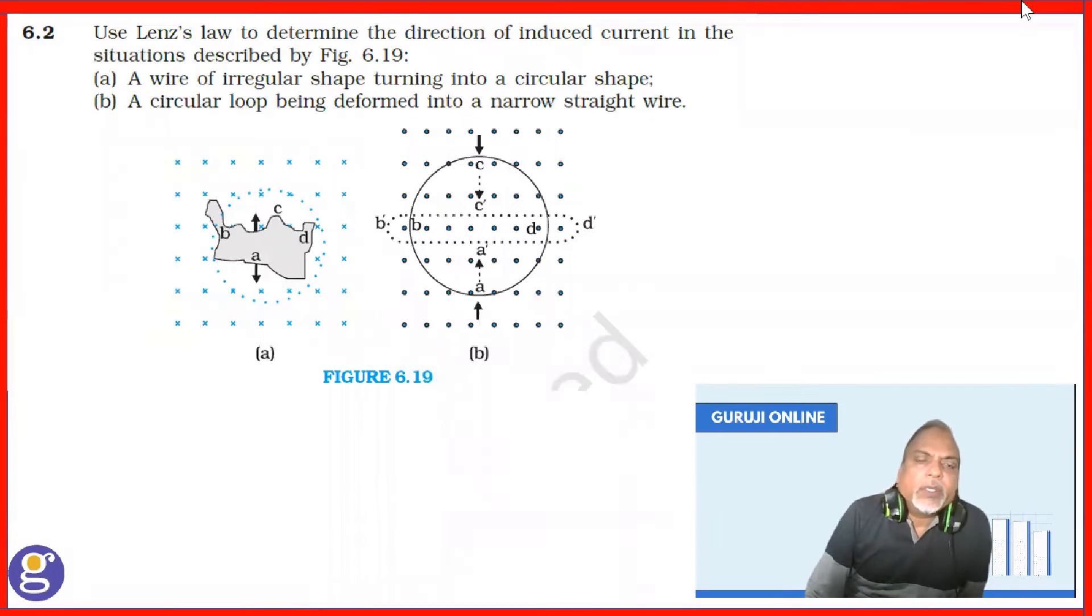Let us see what is question number 2 of chapter 6 electromagnetic induction. It says use Lenz's law to determine the direction of induced current in the situations described by figure 6.19 A and B.